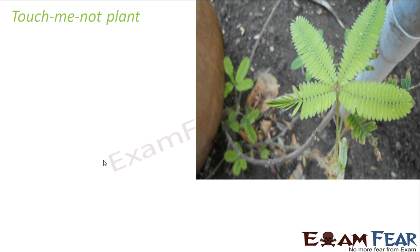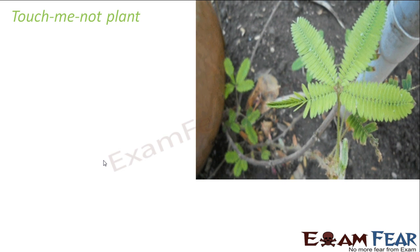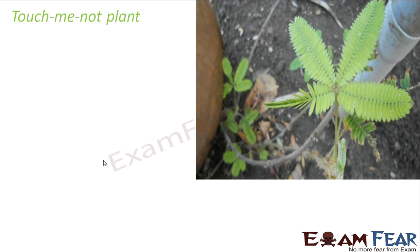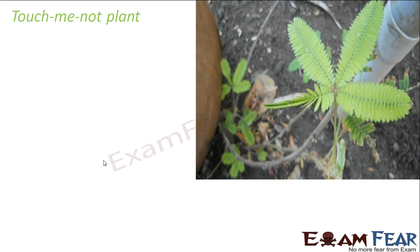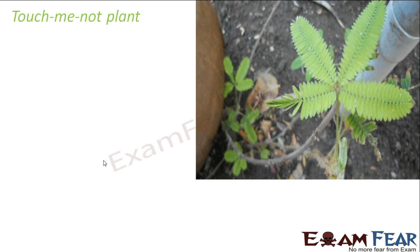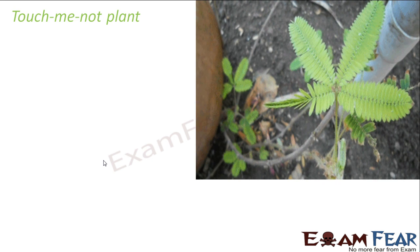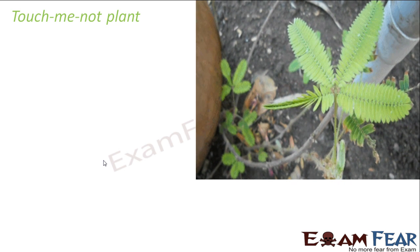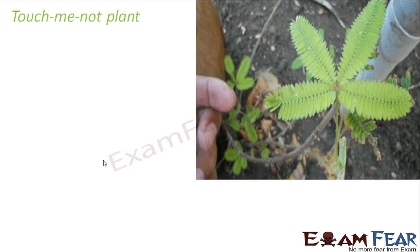Similarly, the touch-me-not plant, which belongs to the mimosa family — when you touch these plants, the leaves respond immediately by drooping and folding. This movement is not related to growth and is an immediate response to the stimulus. The stimulus is the touch and the response is the folding of the leaves. This is also known as thigmotropism, which means response to touch, similar to how we have chemotropism as response to chemicals.